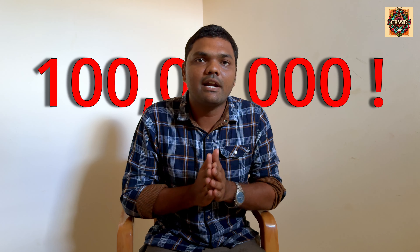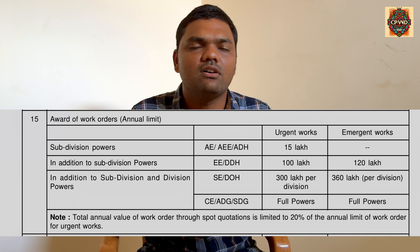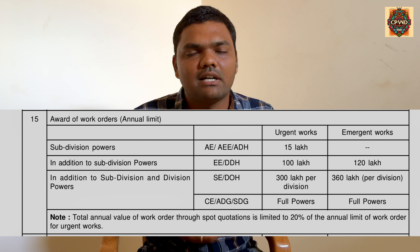For an EE, that is the division office including all subdivision offices, his limit is 100 lakhs. For SE, the SE has power up to 300 lakhs — including all subdivision and division activities for a total division, the SE has power to approve up to 300 lakhs. There is no limit for CE, ADG, or DG for this urgency of work provision.